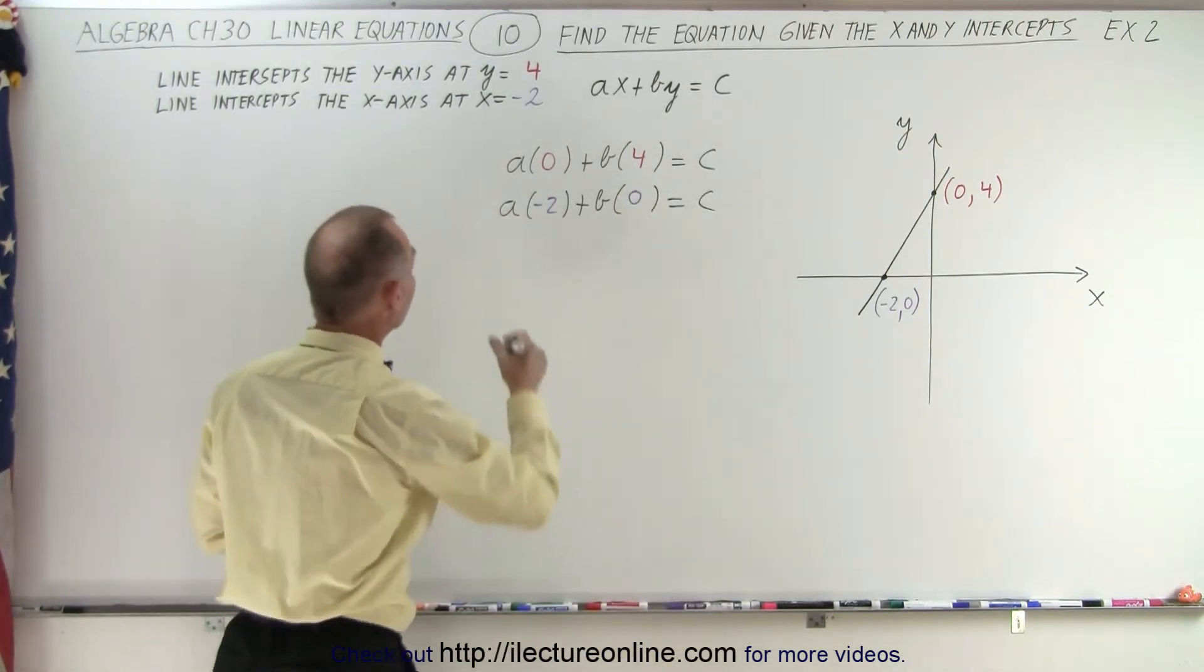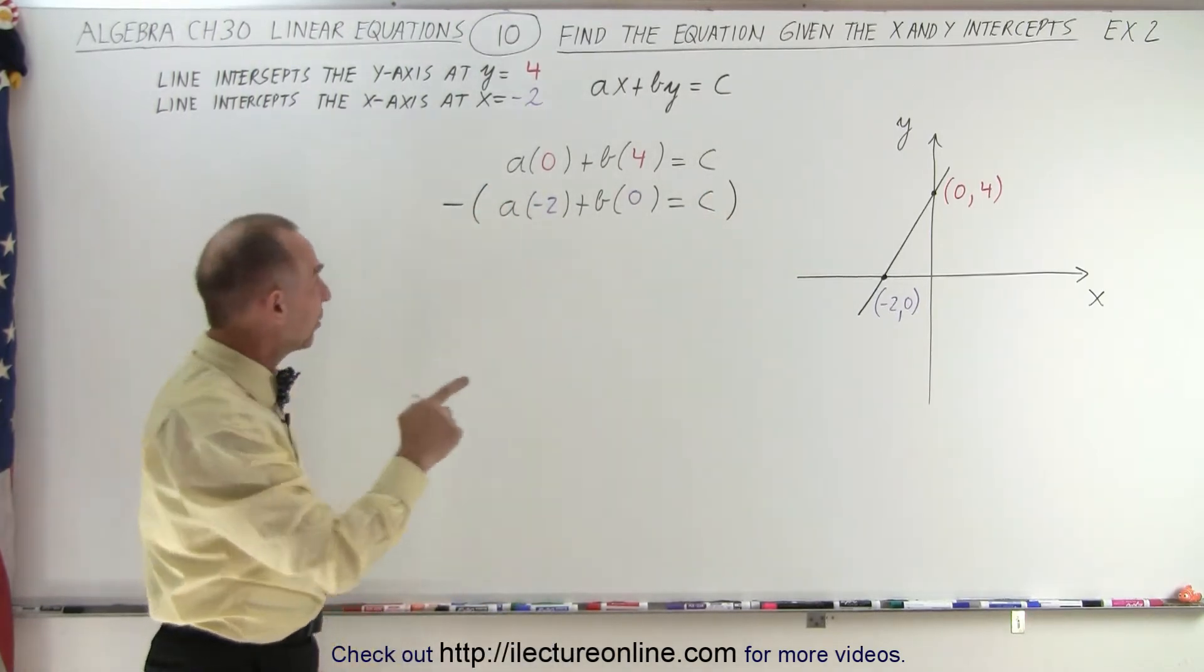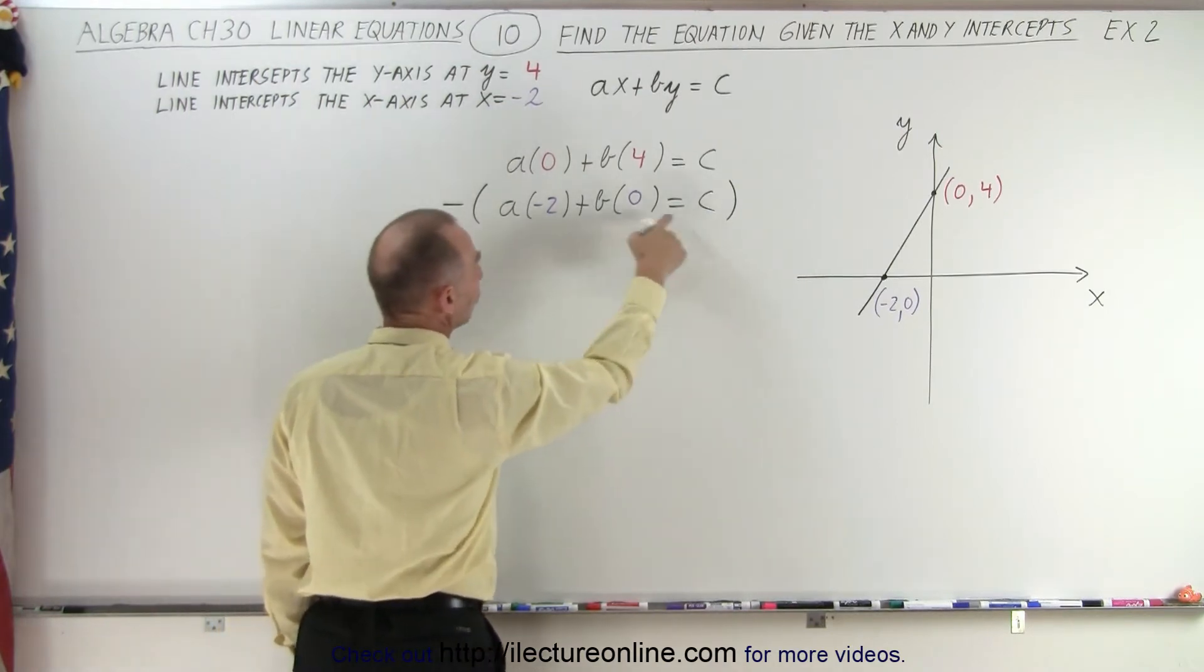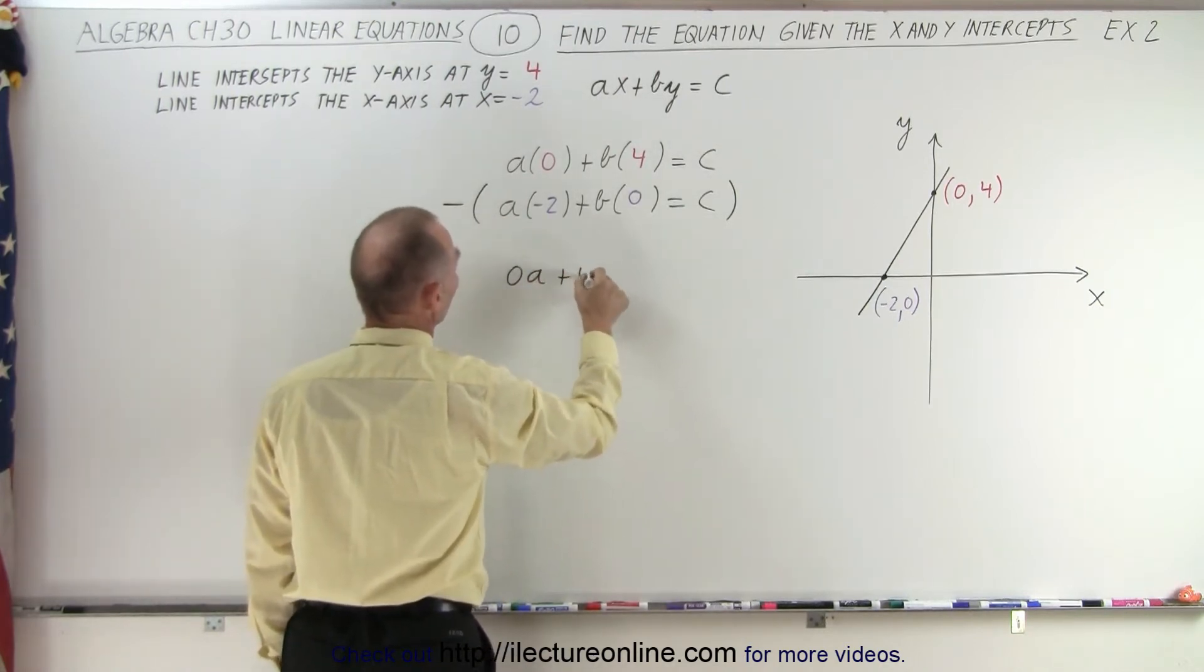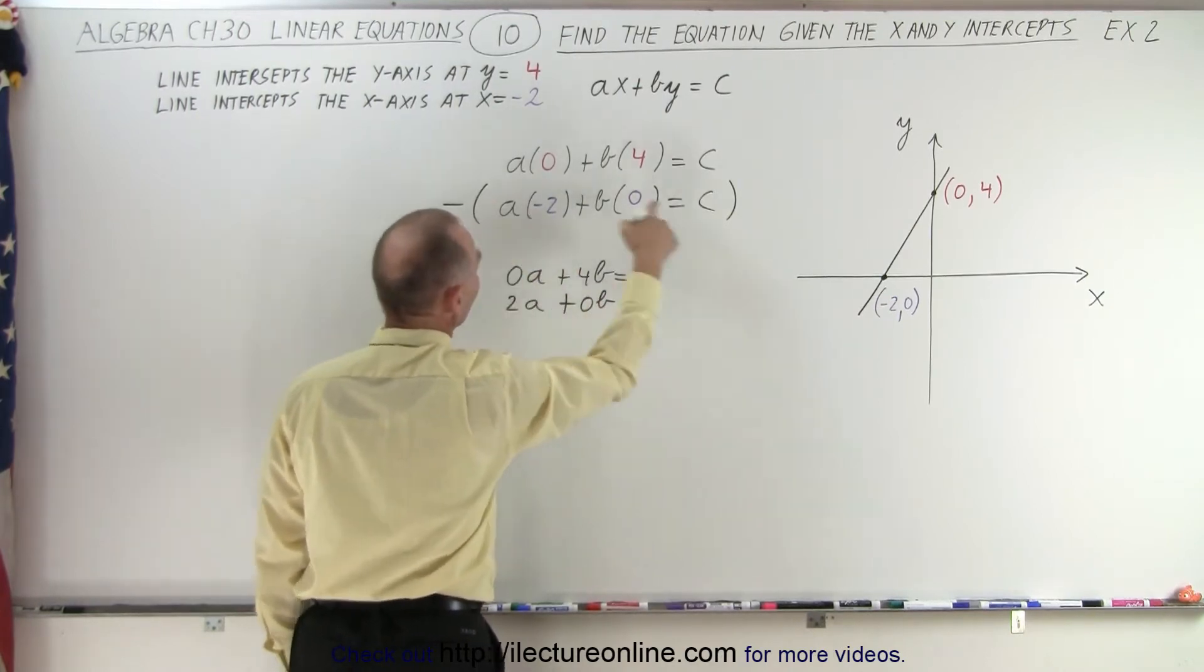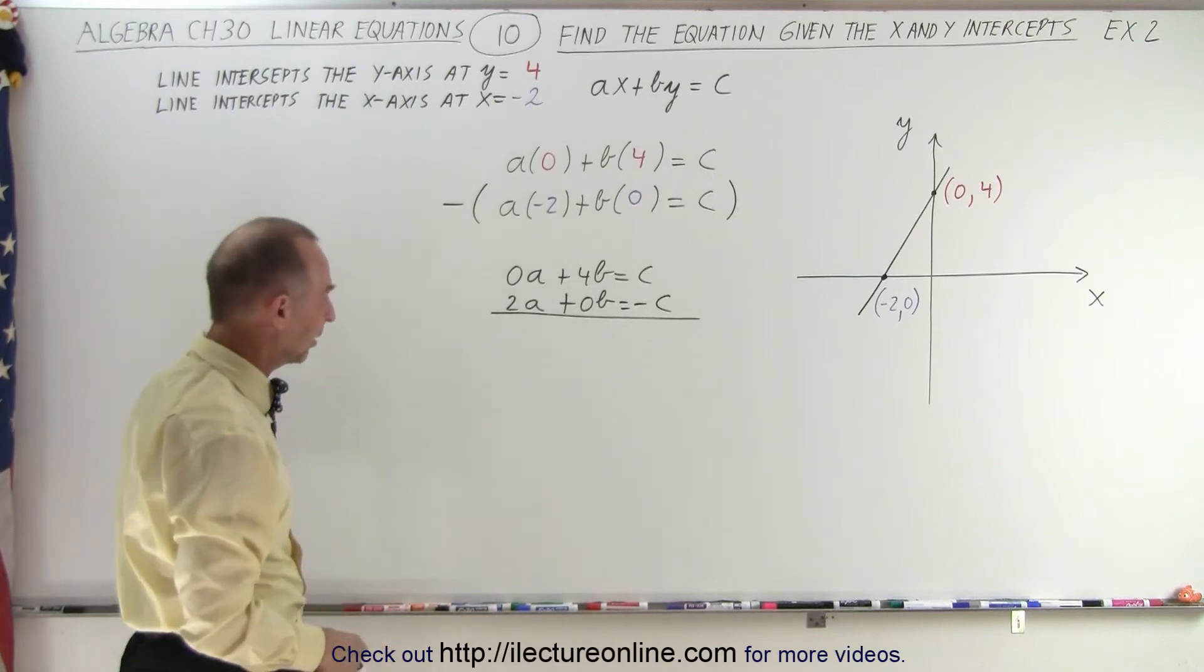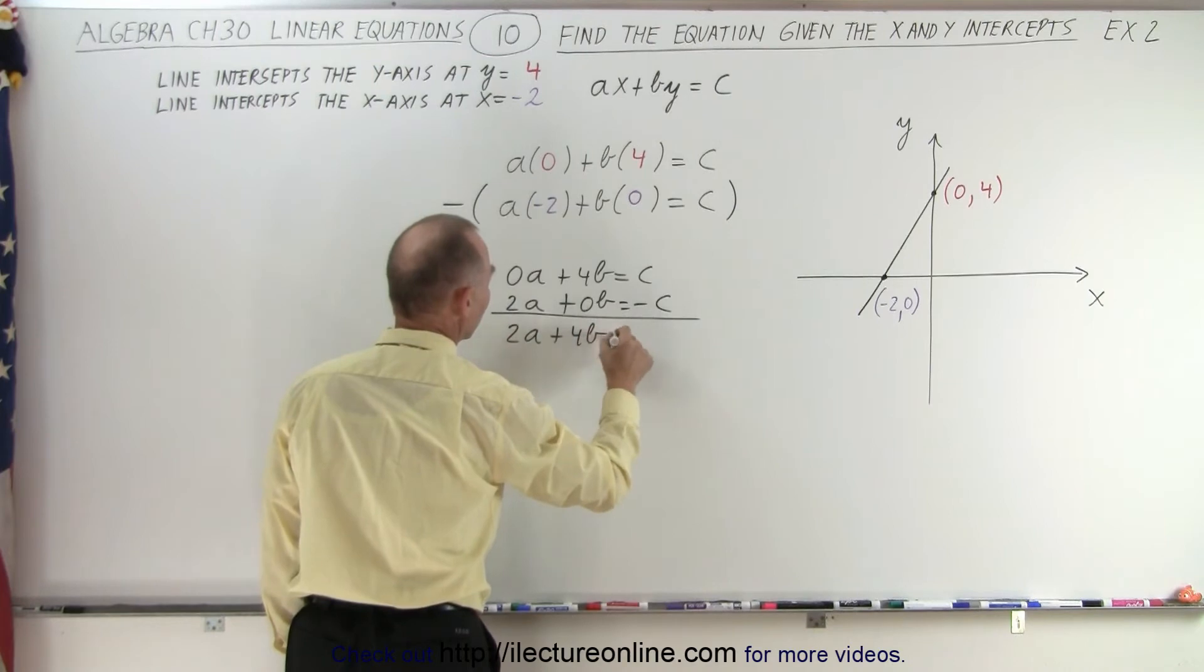I'm going to subtract the second equation from the first. It's better just to implement the negative sign—multiply the negative sign times each of the terms in the second equation and then add it to the first equation. So we end up with 0a plus 4b equals c. And then negative times negative 2, that's positive 2a, plus 0b, and negative c. Now we simply add the two equations together. We end up with 2a plus 4b is equal to 0.